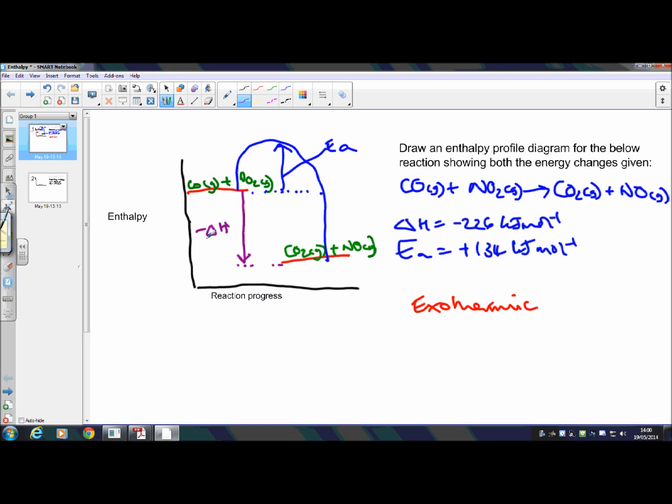So labeling your negative delta H, arrow going down for an exothermic reaction, labeling your activation energy arrow starting from your reactants up to the curve and then finally labeling your reactants and your products onto the diagram.